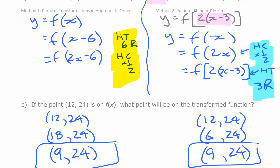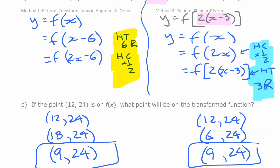Many people put things into standard form where the inside expression is factored, and then simply know that translations come last — after all other transformations. You can always work it out by tracking replacements, but many find it easier to factor and apply translations last.